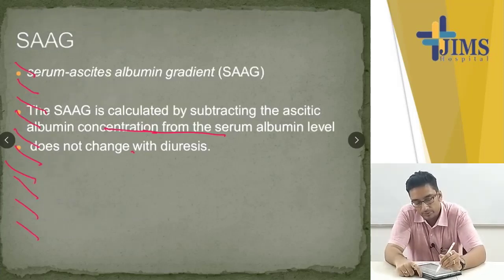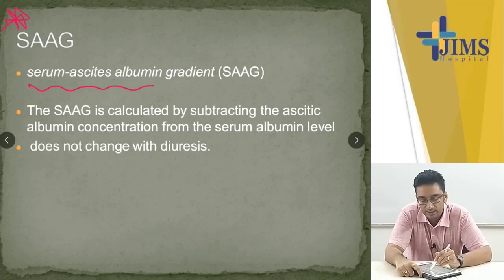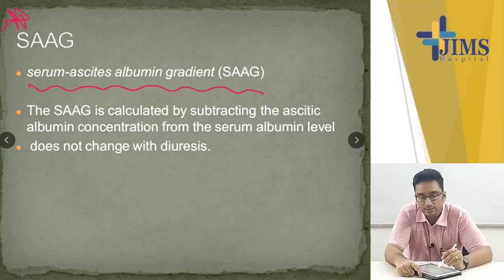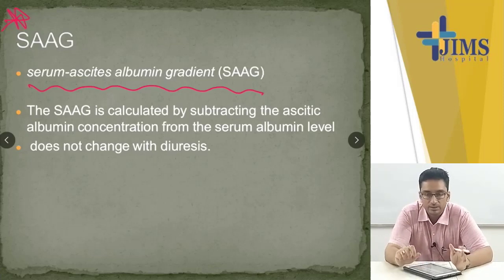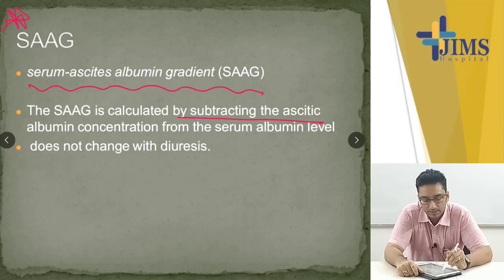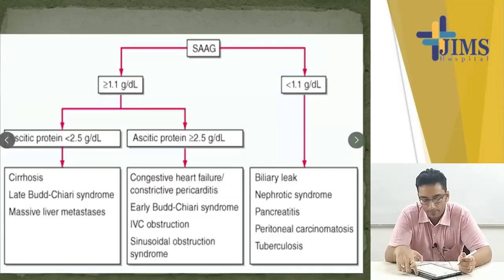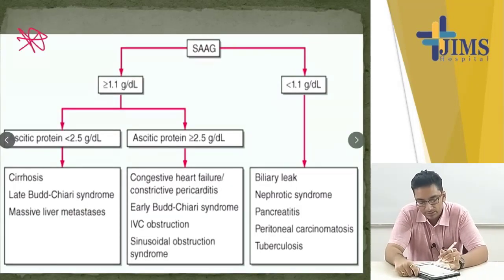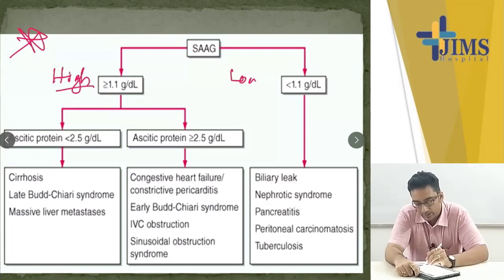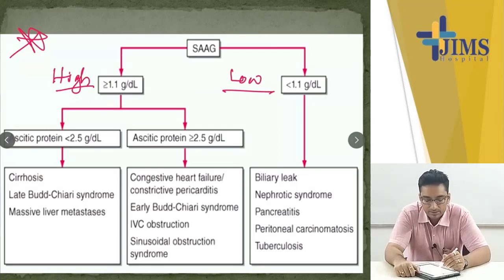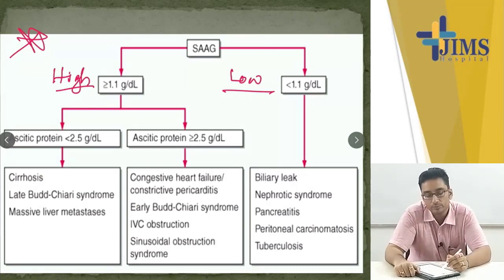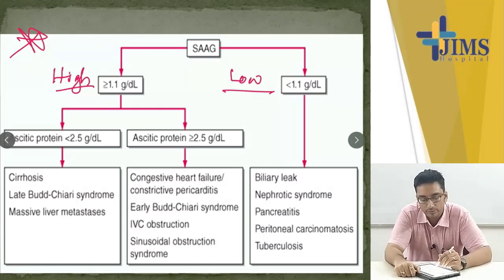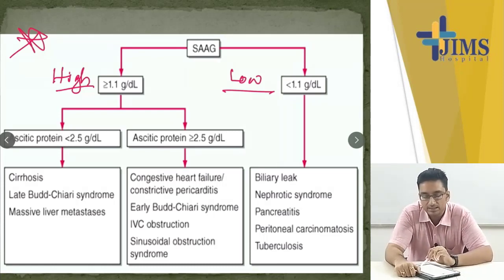Very important: the SAAG — Serum Ascites Albumin Gradient — is calculated by subtracting the ascites albumin concentration from the serum albumin level. It does not change with diuresis. High SAAG means the difference is more than 1.1; low SAAG means the difference is less than 1.1.